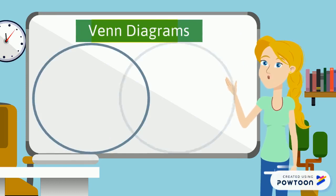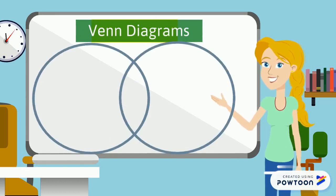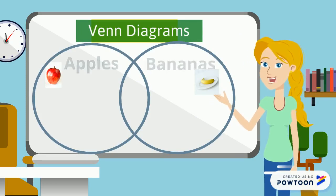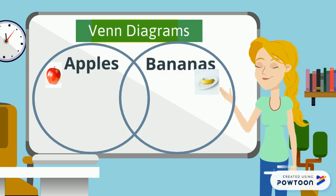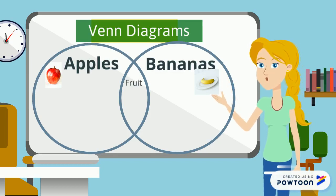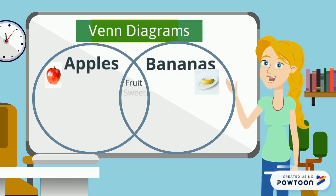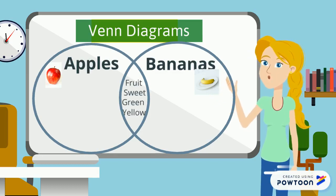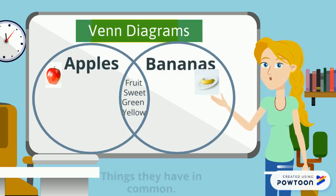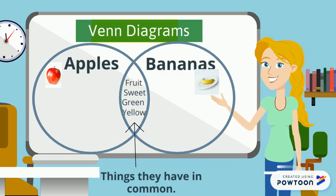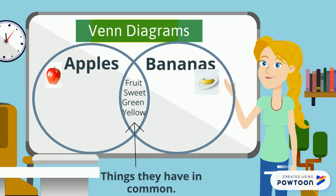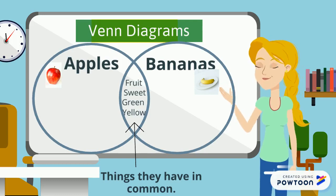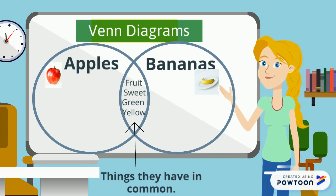Now we're going to start filling out our circles. My left circle is all about apples. My right circle is all about bananas. But notice that overlapping part of the circle — those are the things that both apples and bananas have in common. So they're both fruit, they're both sweet, they can both be green, they can both be yellow.